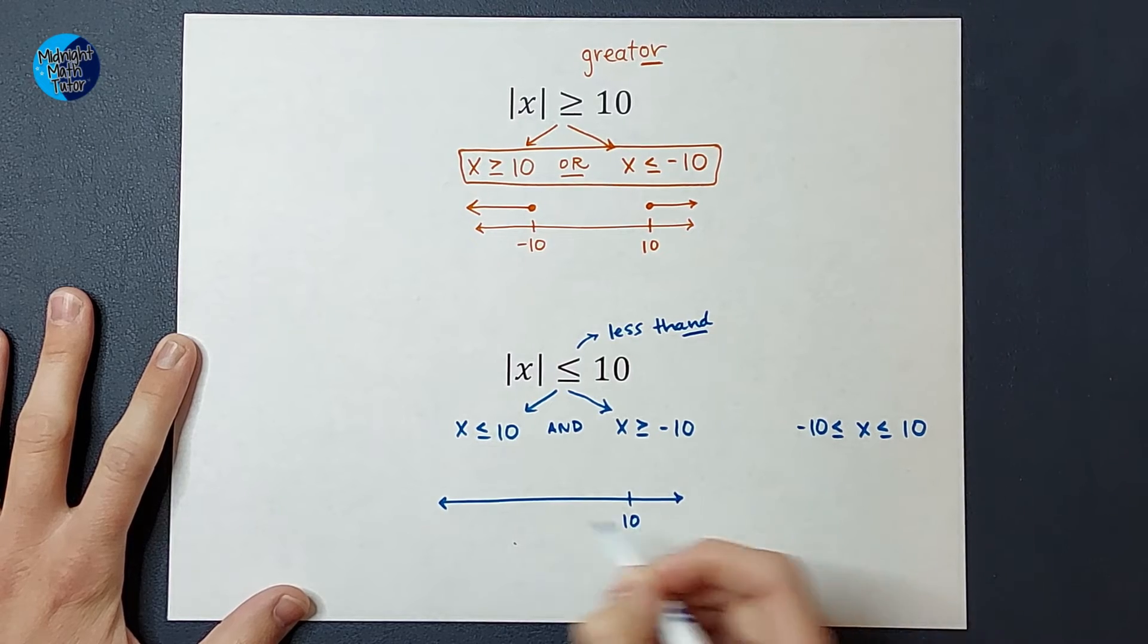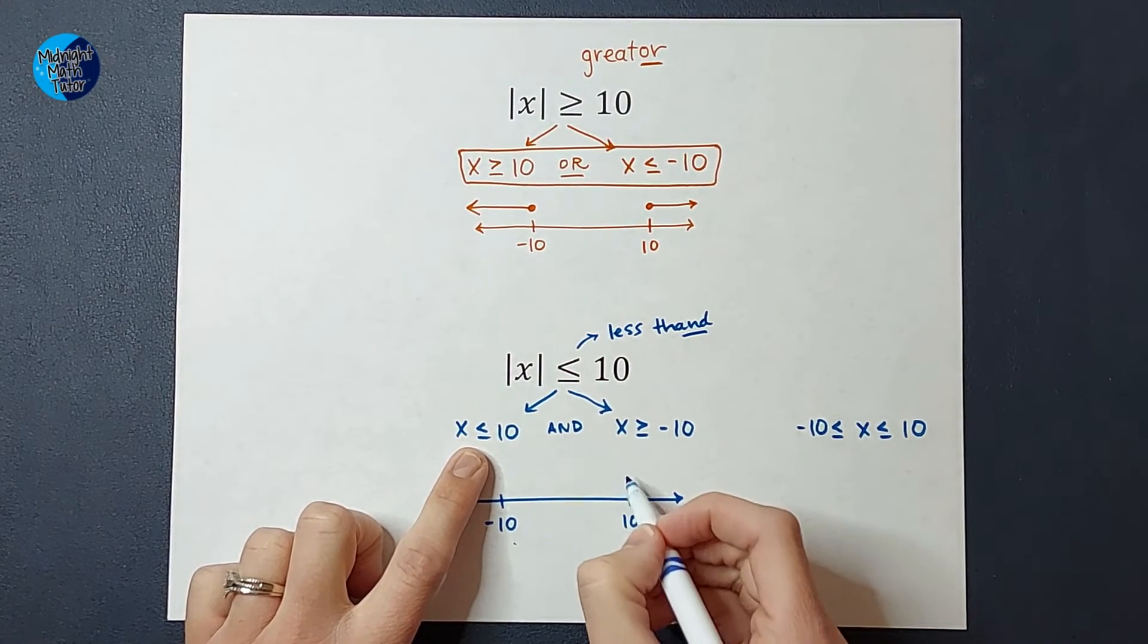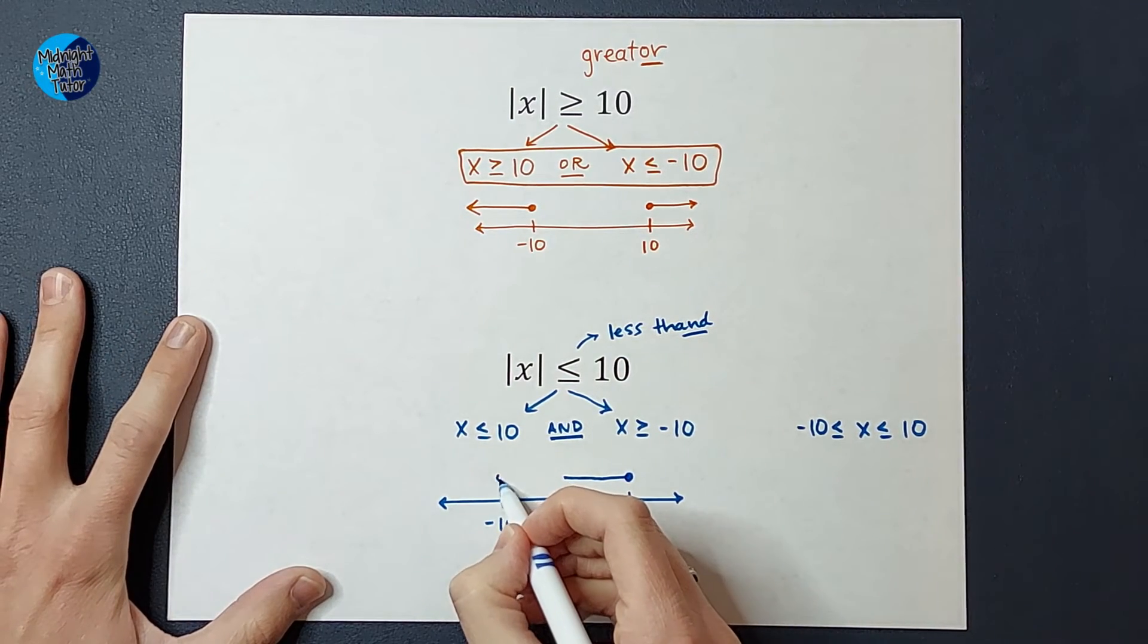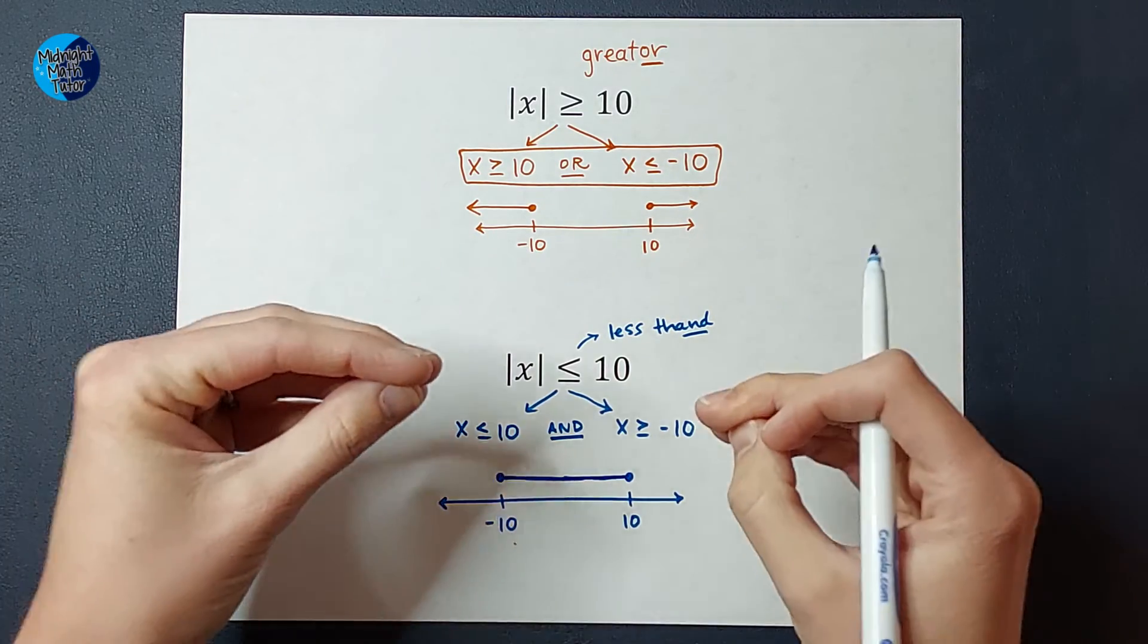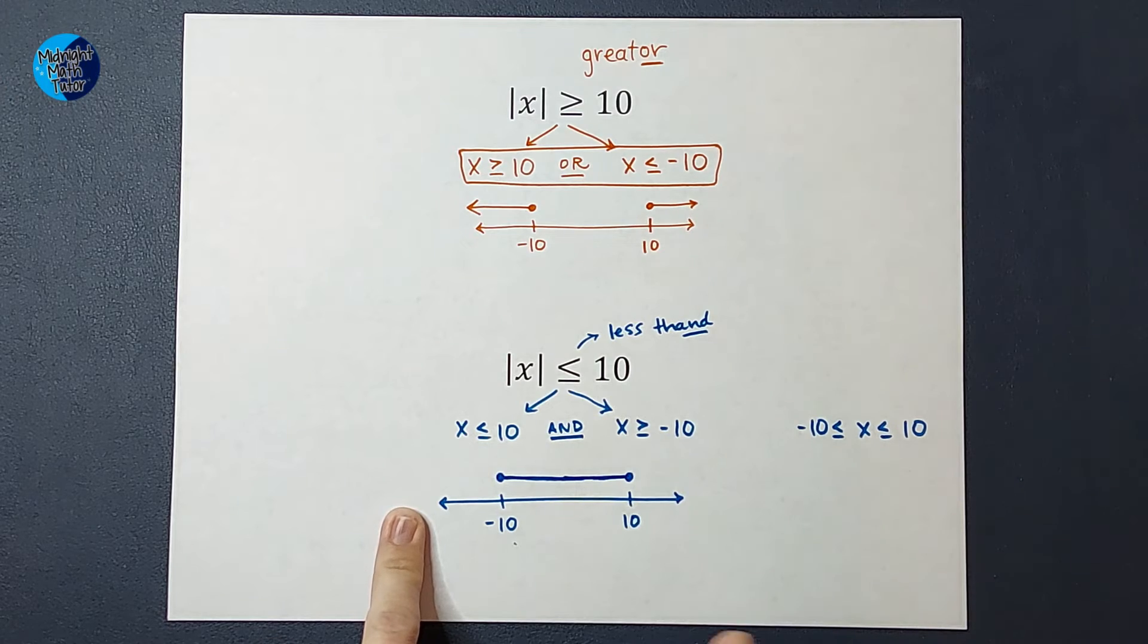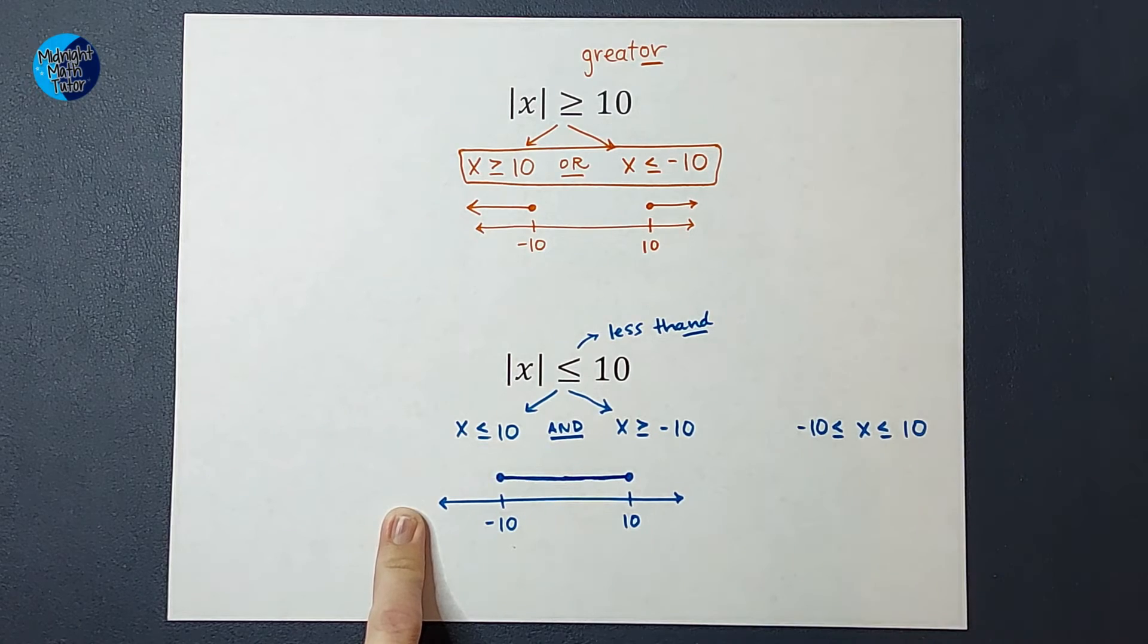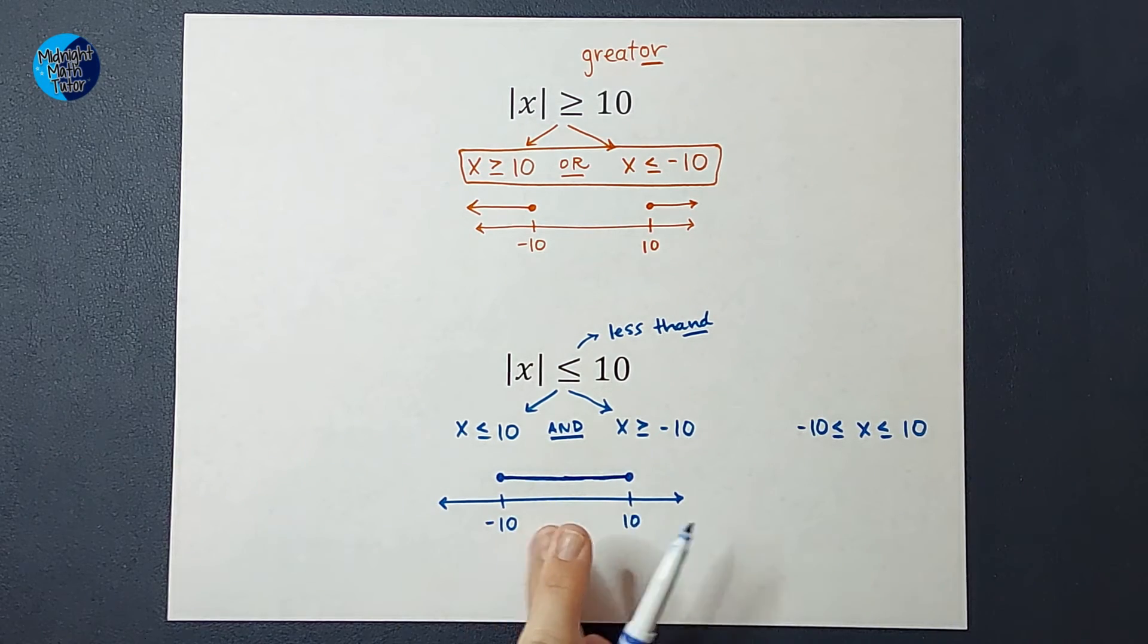So we have 10 and negative 10, and this is telling me that X is less than or equal to 10, so that would be this way. And X also needs to be greater than or equal to negative 10, meaning those meet in the middle. The and tells me it needs to fulfill both of those requirements. Because negative 20 is less than or equal to 10, but that wouldn't work in my inequality. Negative 20, the absolute value of that would be 20, and 20 isn't less than or equal to 10. So it needs to fulfill both of these, meaning it is just between these two.